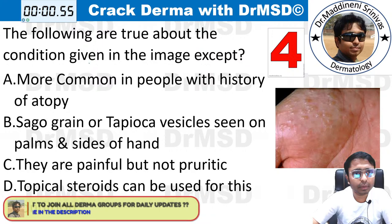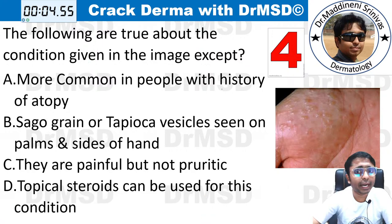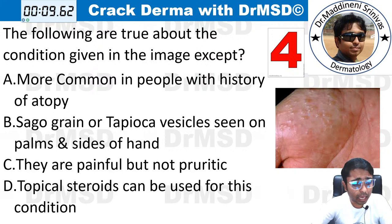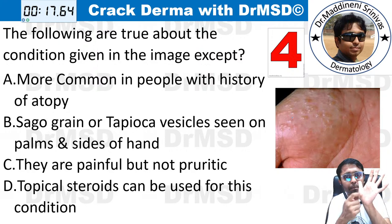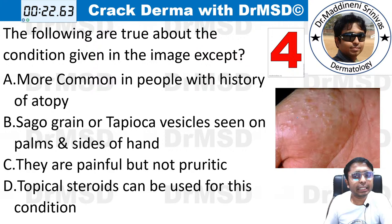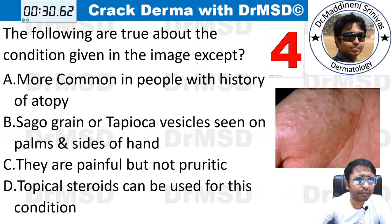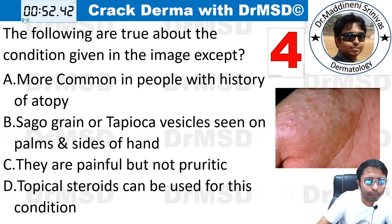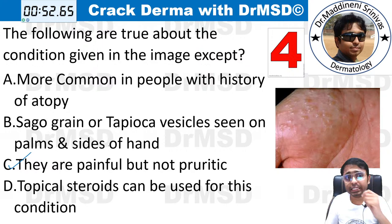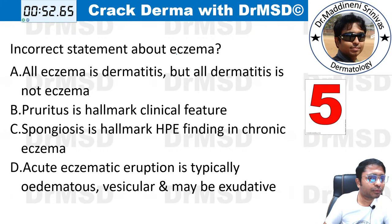Question number four: identify the wrong statement related to the image shown. In this image you can see deep-seated vesicles over the palms — these are also described in one of the options, so I should not say the word. Identify which of the following is an incorrect statement regarding this picture. Gopi answered option C — absolutely correct. The diagnosis is pompholyx, and we will discuss it after all questions are completed.